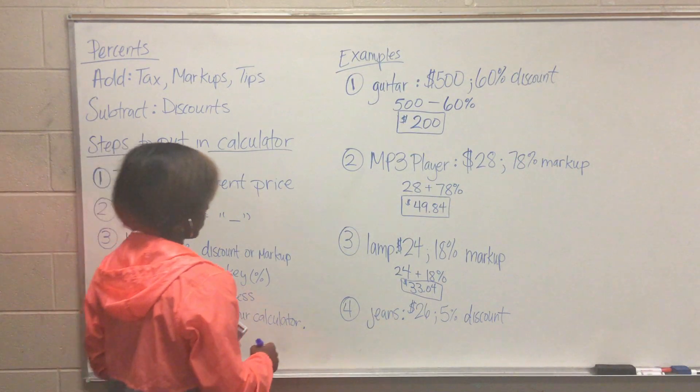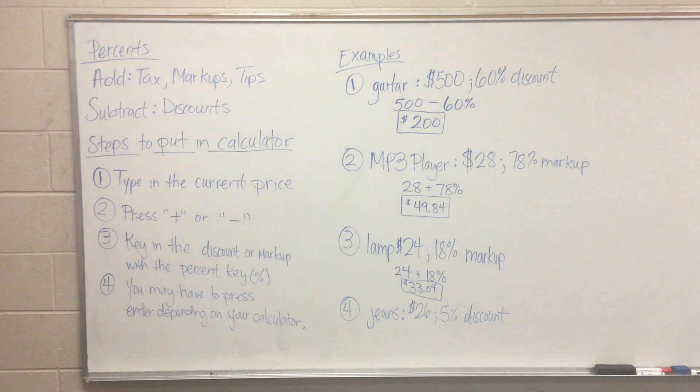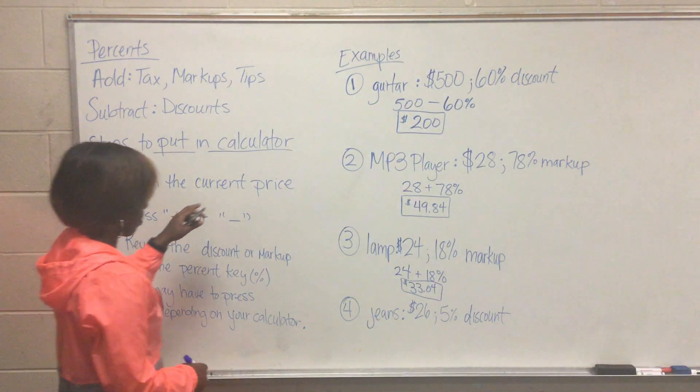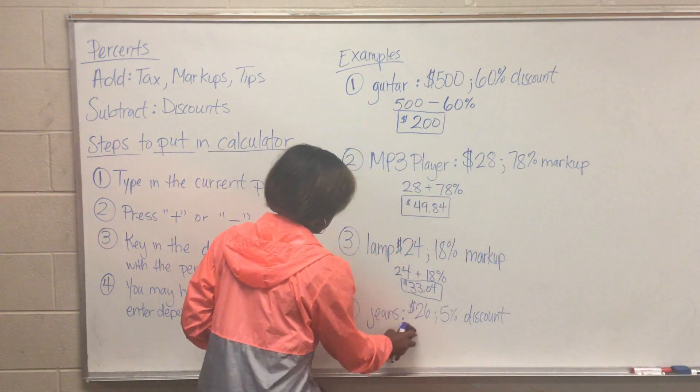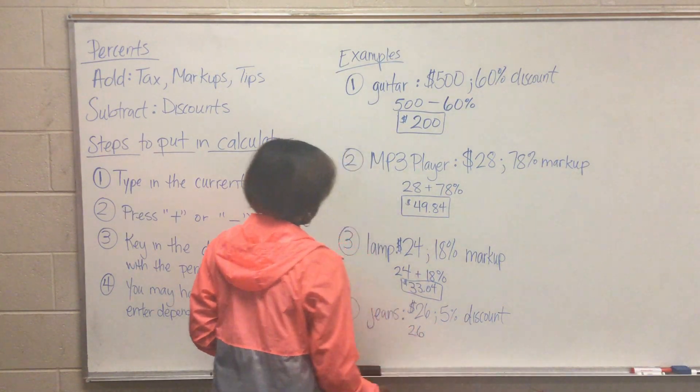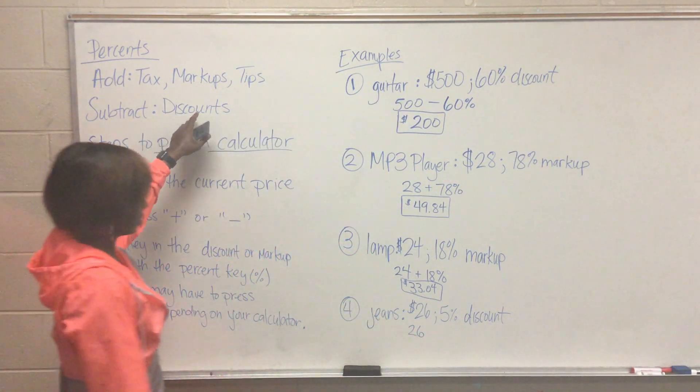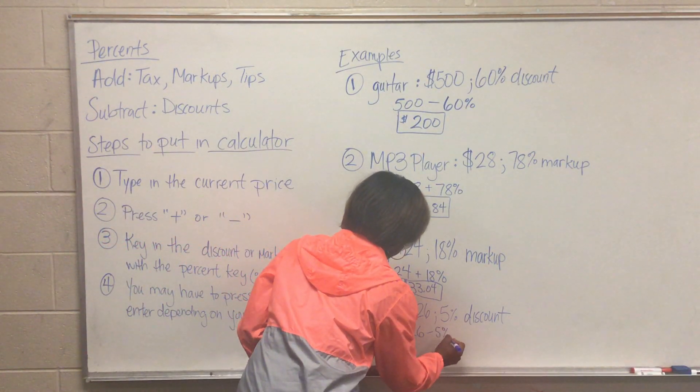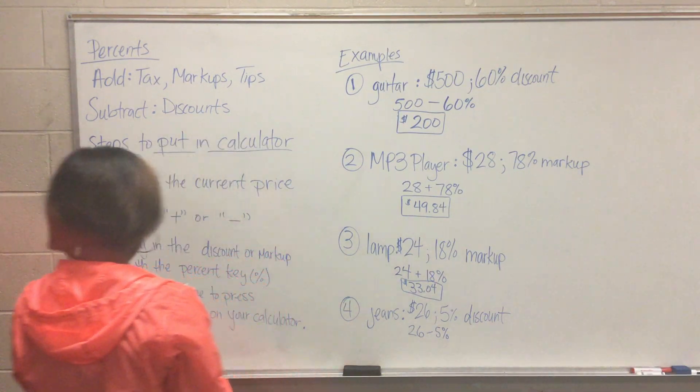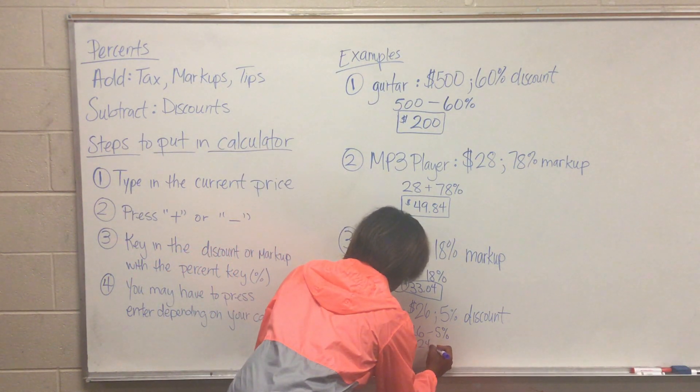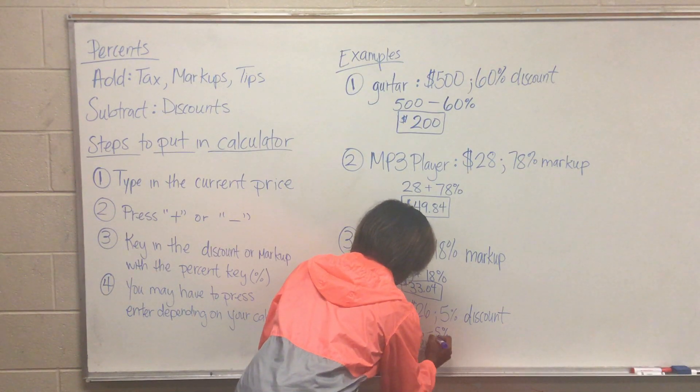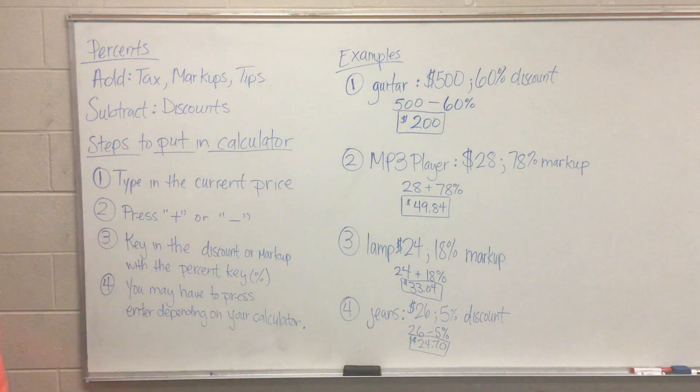For number four we have jeans that are $26 and it is a 5% discount. So I'm going to type in the current price or the original price. It's a discount, so I know I need to subtract. And then 5%. So 26 minus 5% would give me $24.70. In the calculator it will say 24.7, but we are talking about money. So once again we want to use good judgment.